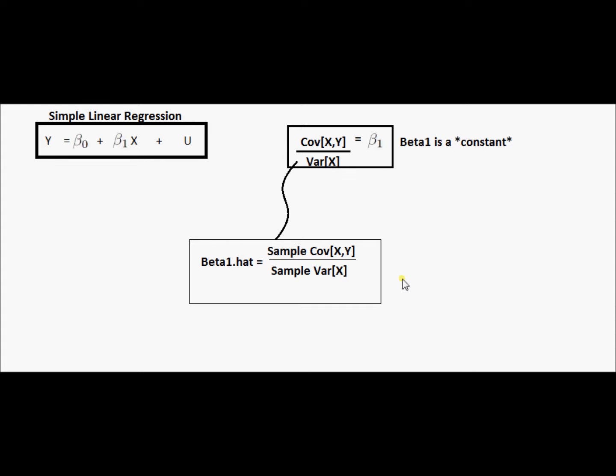There are a whole bunch of different ones of those, and which one I get is random if I take my sample as a random sample. So this idea of beta one hat is a random variable. I don't know what it's going to be in advance of actually taking my sample.